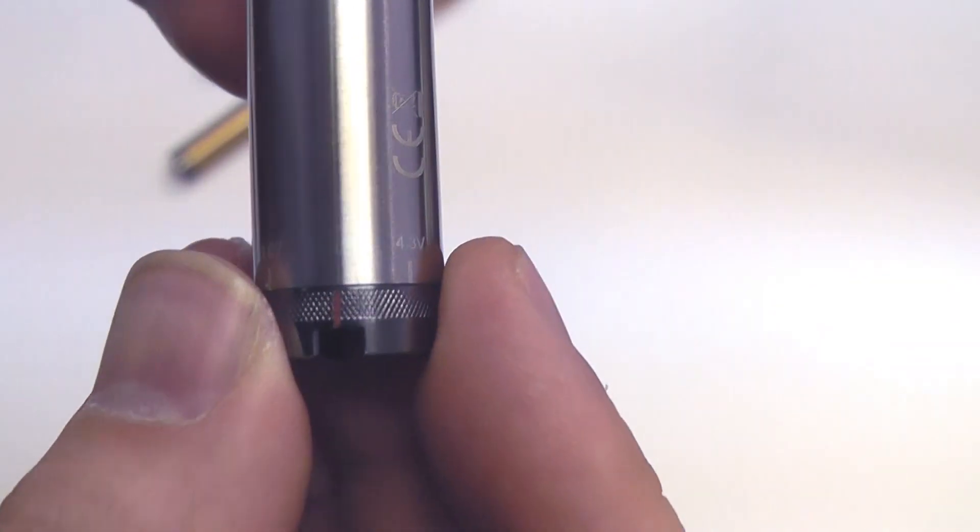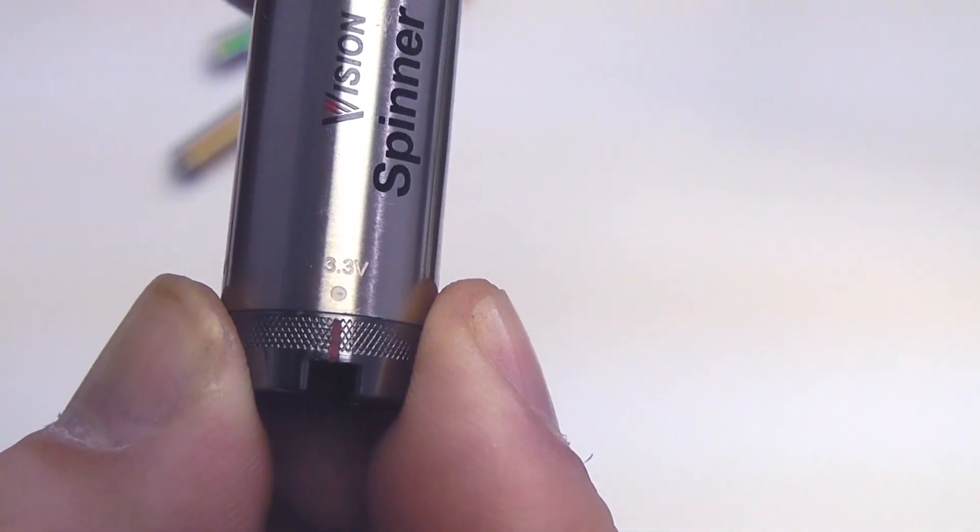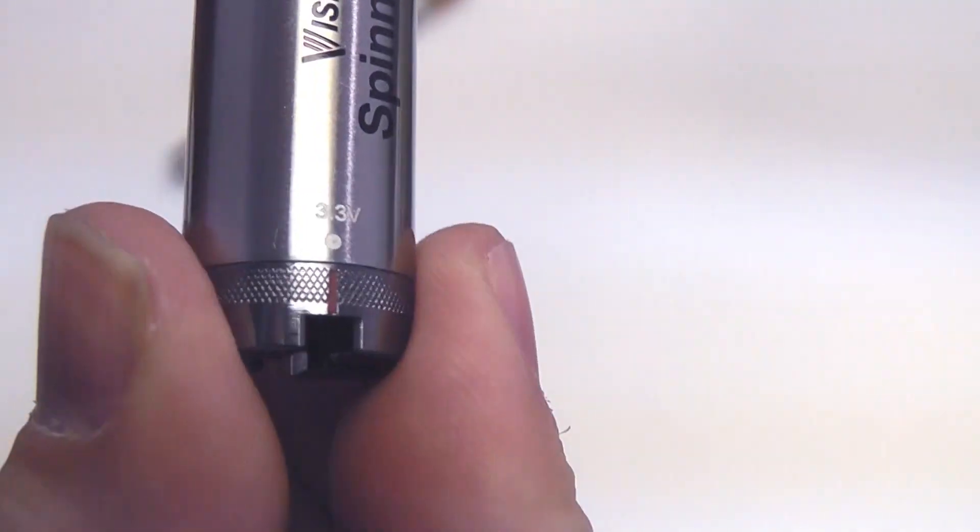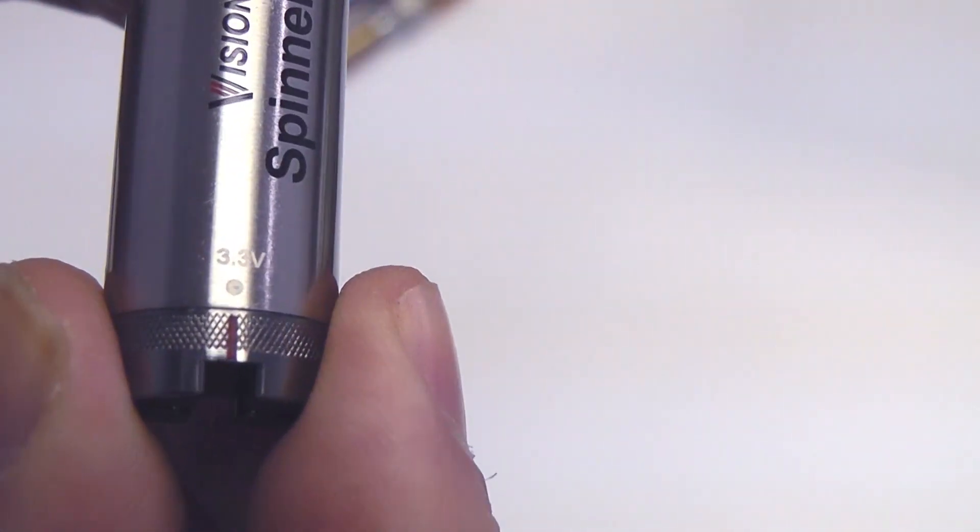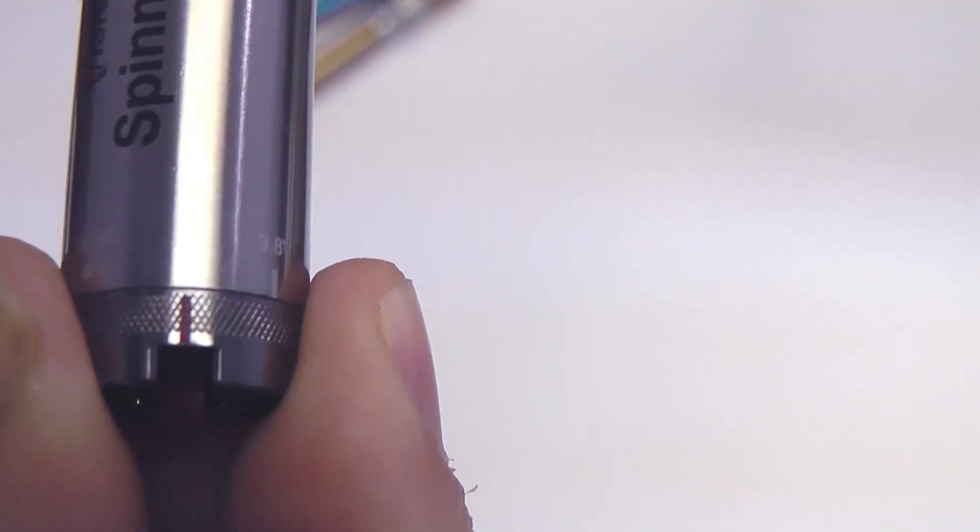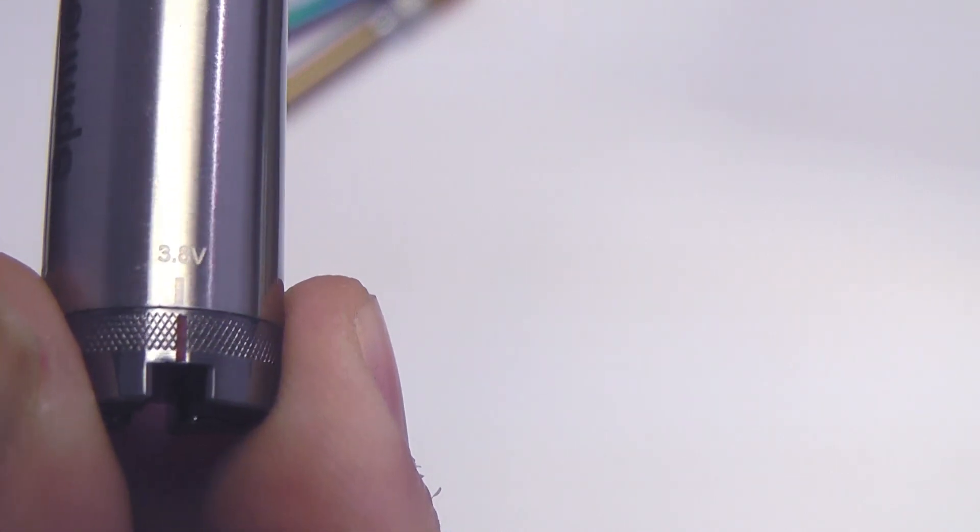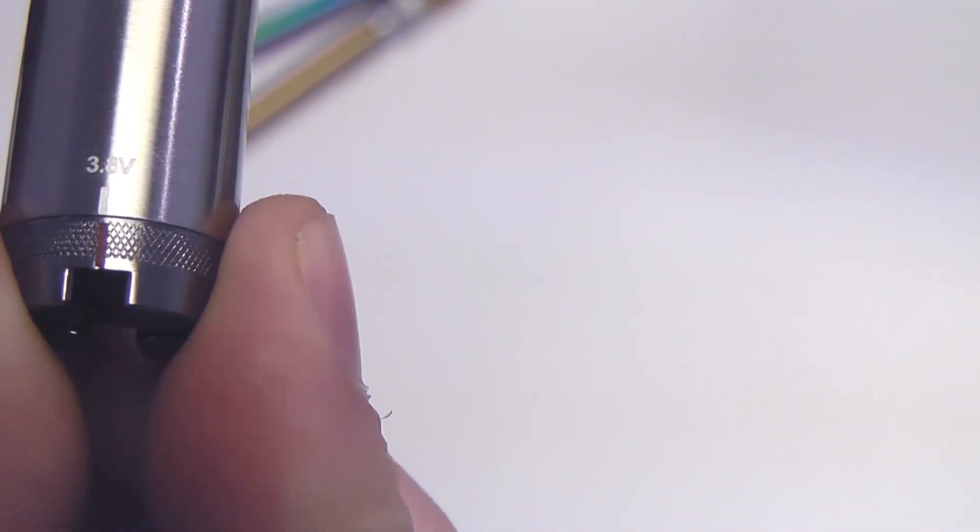So what they've done is they've actually put in locks at each separate interval here. At the very lowest 3.3, it doesn't go any lower than that. It locks into place there. Then if I turn it, you'll see it turns smooth until it gets there and it stops right there at the 3.8, and it locks in right there. I can twist it, it doesn't move.